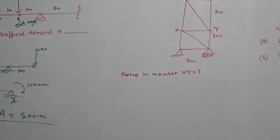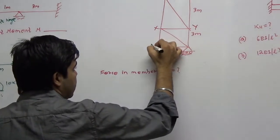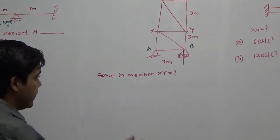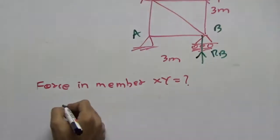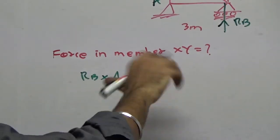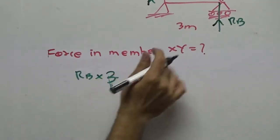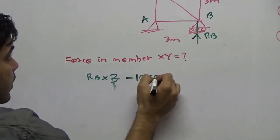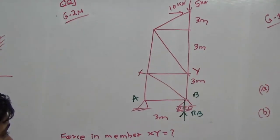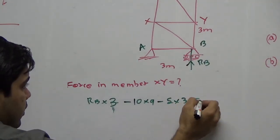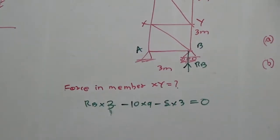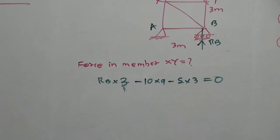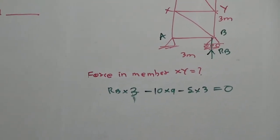First, calculate the reactions. This is point A and this is point B. Assuming rB upward, taking moments: rB × 3 is anti-clockwise, while 10 × 9 and 5 × 3 are clockwise. Setting the sum to zero: rB = (10 × 9 + 5 × 3) / 3, which gives rB = 35 kN.